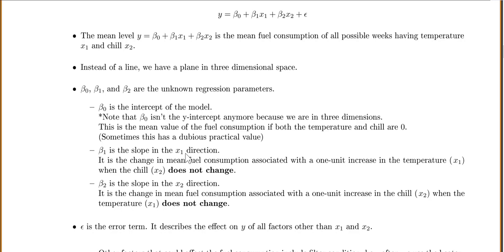Beta 1 is our slope in the x1 direction. What this means is it's the change in our mean fuel consumption associated with a one-unit increase in our temperature, x1, when the chill does not change. So this means if x1 goes up 1 and x2 stays the same, then y goes up blank. So that's what our slope for x1 tells us.